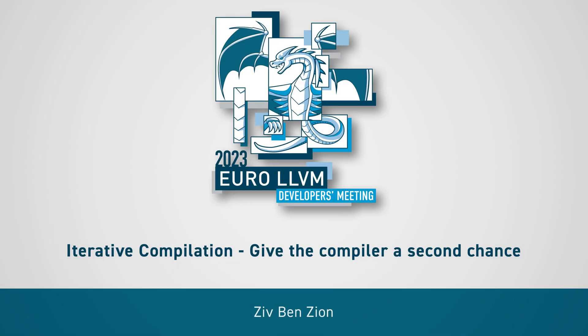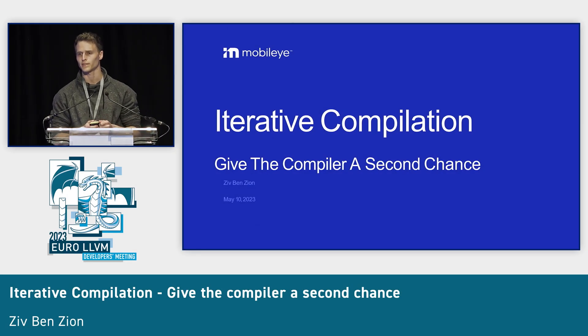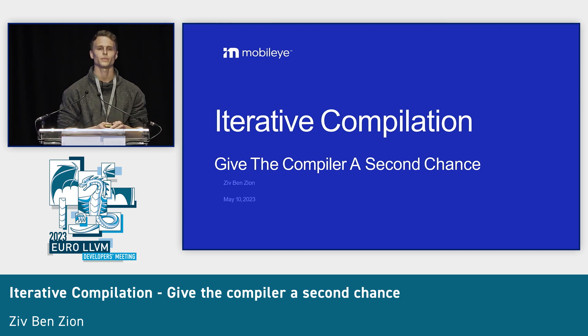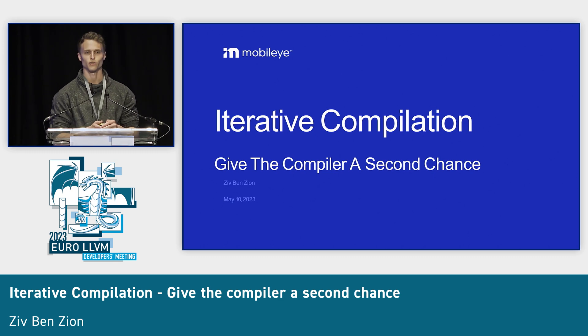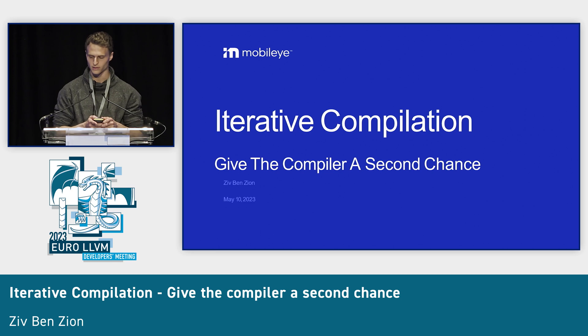Hello, everybody. My name is Ziv Ben-Zion. I'm a compiler engineer at Mobileye. We develop compilers for Mobileye IQ chip accelerators which are used in autonomous vehicles. I will be presenting iterative compilation and how we gave the compiler the power to revisit some of its decisions.